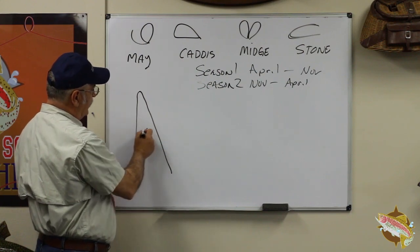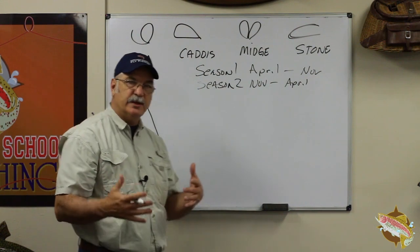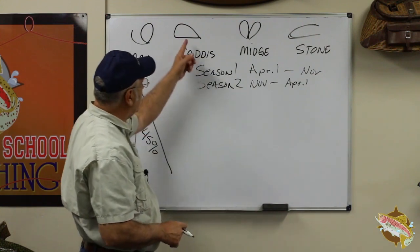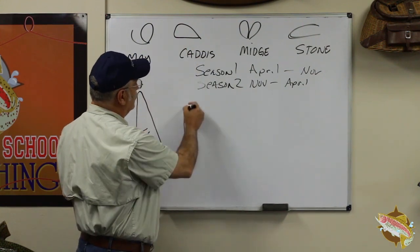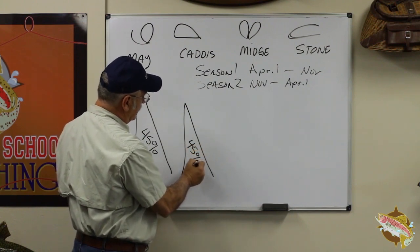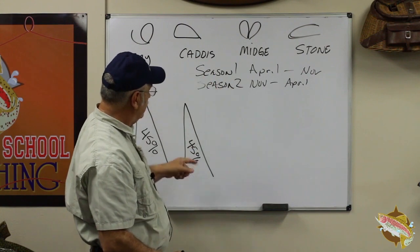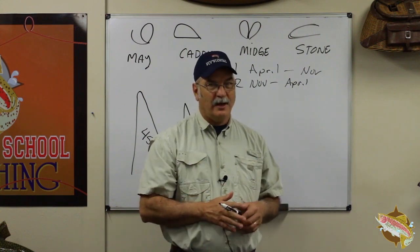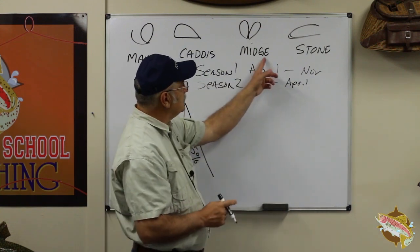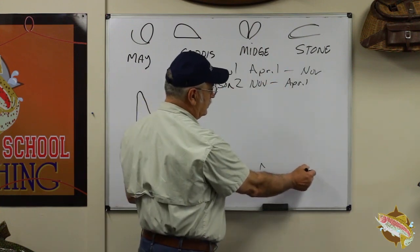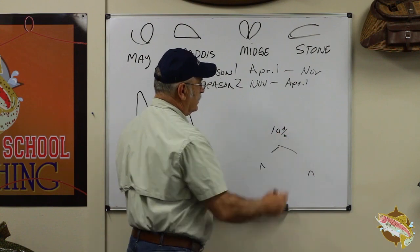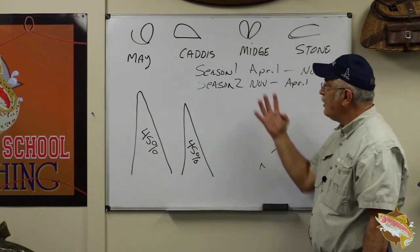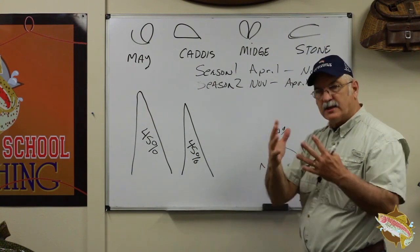Mayflies represent 45-plus percent of what a trout eats during the season. Caddisflies represent another 45 percent of what a trout eats during season one. That's 90-plus percent of what a trout eats during the season from just two insects. The remaining two piles of midges and stoneflies together make up about 10 percent. This is a rough figure designed to give you an understanding of how these four bugs operate and interact with the trout that eat them.